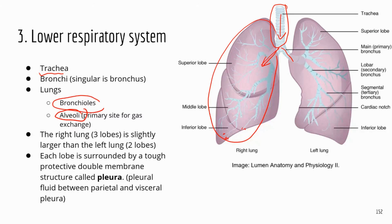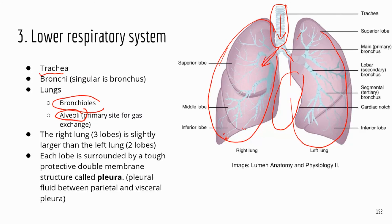The right lung has three lobes and is slightly bigger than the left lung because the heart is slightly more to the left side, giving more space to the right lung. Both lungs are surrounded by a double membrane structure called the pleura.